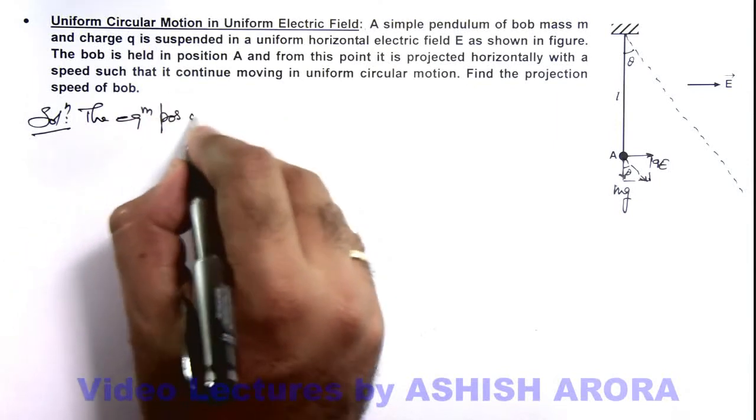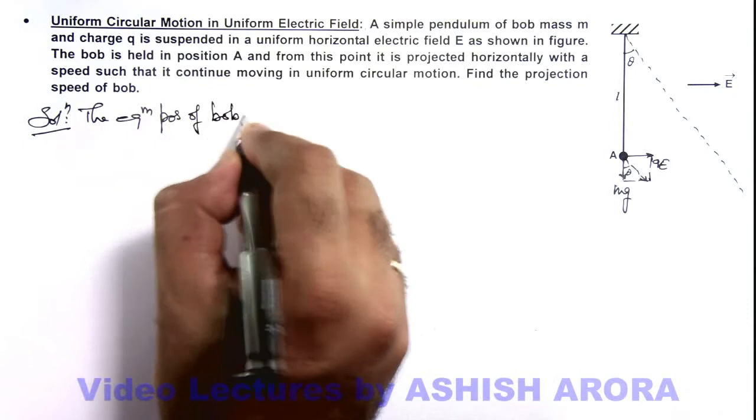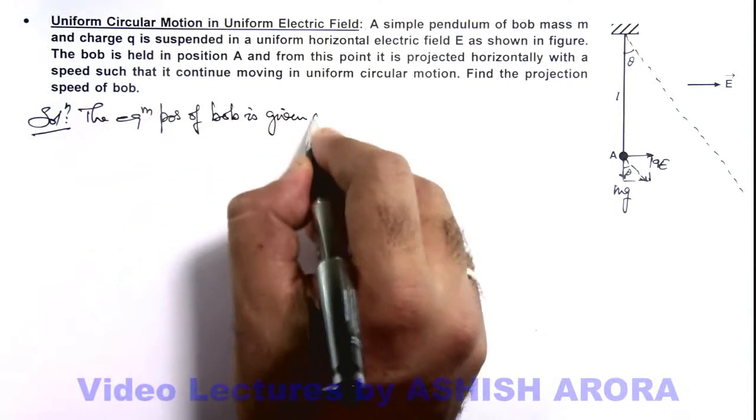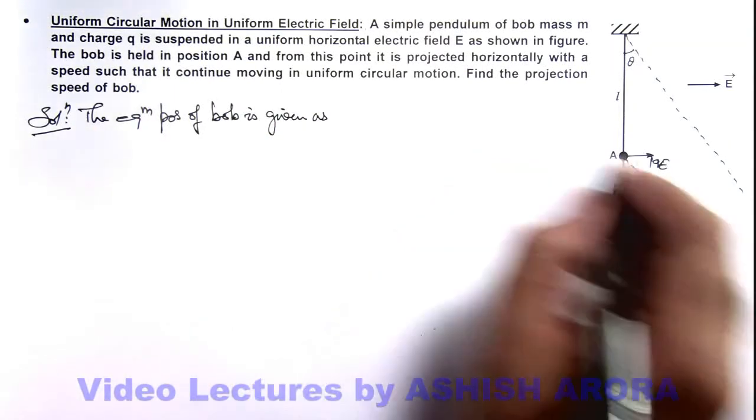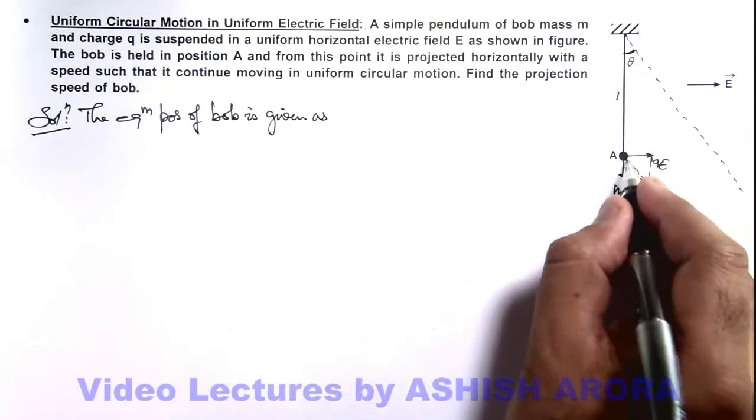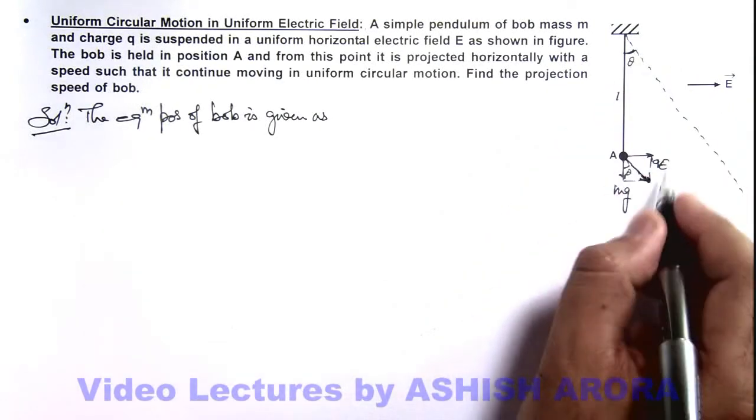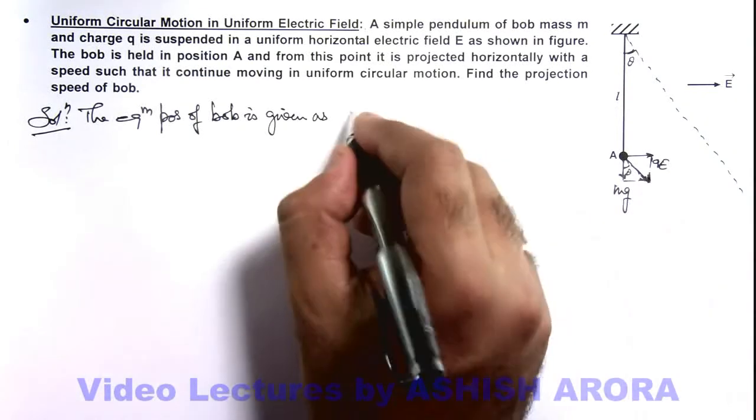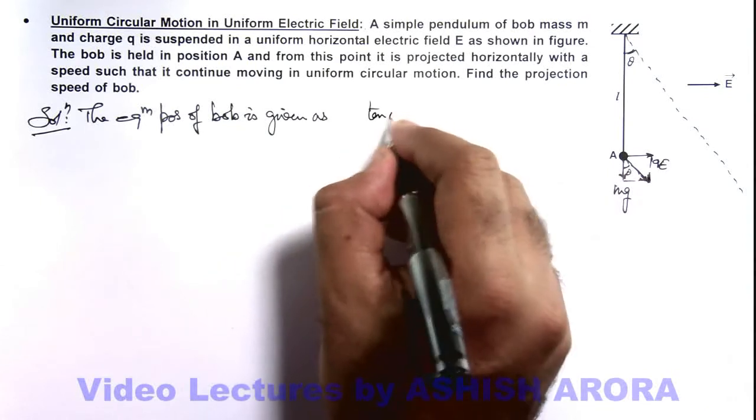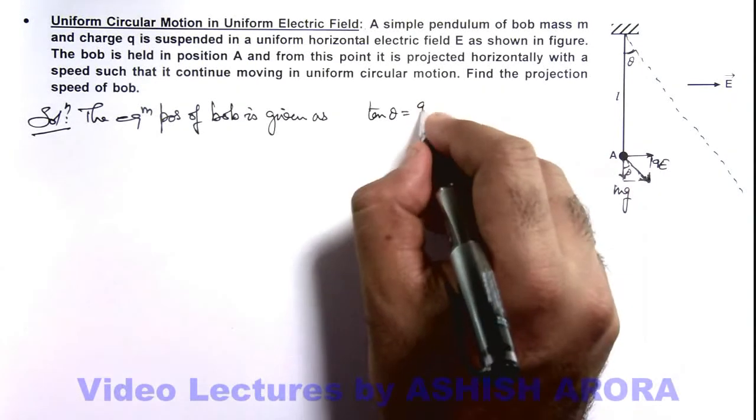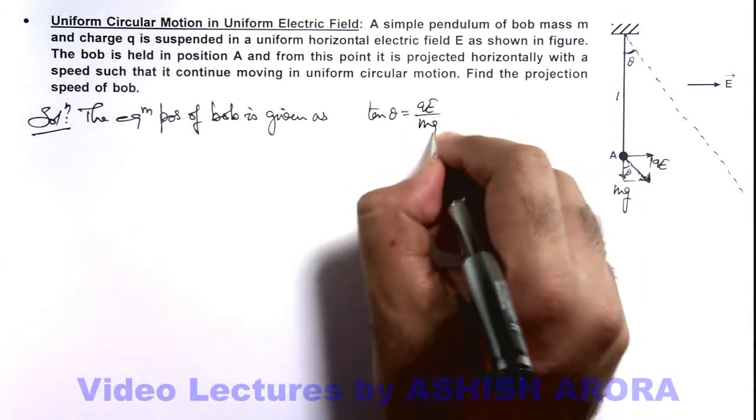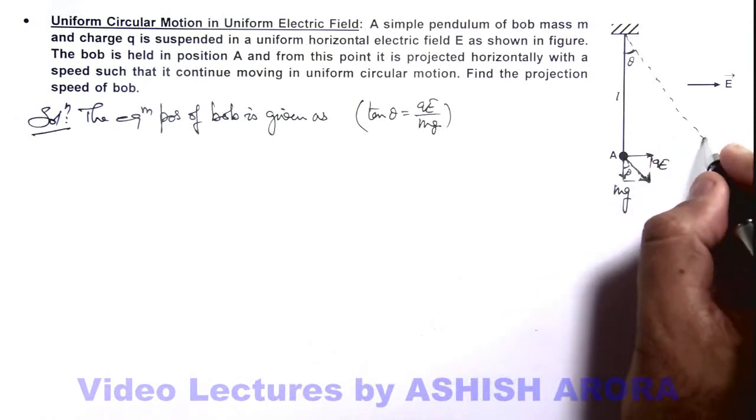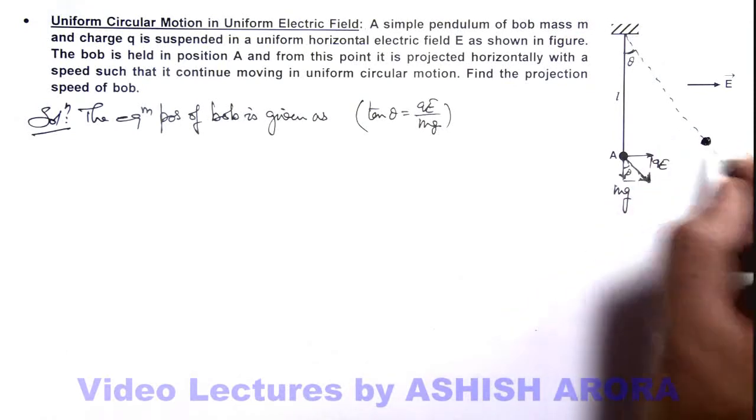And we can write the equilibrium position of bob is given. Here we can write the value of theta is the direction of resultant force acting on this bob, which is the resultant of electrical force and the gravity force. So here it can be written as tan(theta) equals qE by mg. So this is the value of angle along which the bob will be in equilibrium. If it is released it will come to equilibrium position over here.